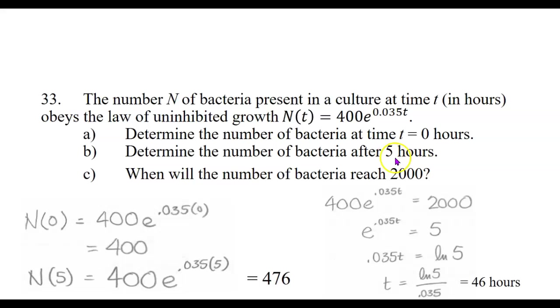To determine the number of bacteria after five hours, we plug in five for t and calculate 400 times e to the 0.035 times five. When you put this into your calculator, you will probably want parentheses around the 0.035 times five part so that it does the multiplication before it raises e to that power.